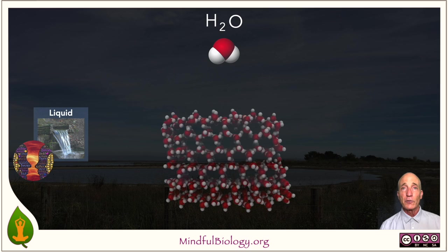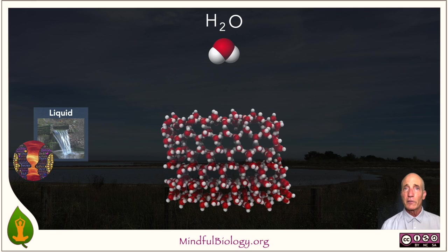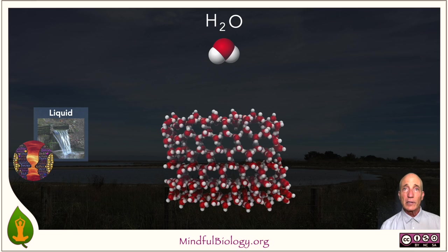We do know that water occurs in a solid form we call ice. When water is in the ice configuration, when it's solid, the molecules are arranged in a very regular three-dimensional pattern — essentially a crystal. The connections between the individual molecules tend to be tight and strong, so the molecules move around a little bit but not very much; they maintain their position.